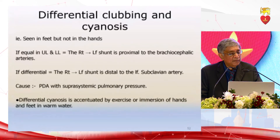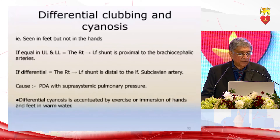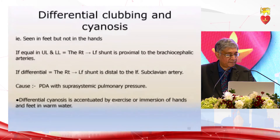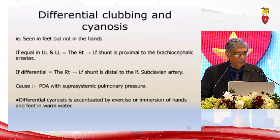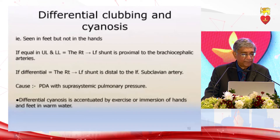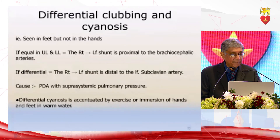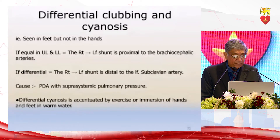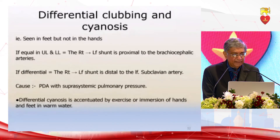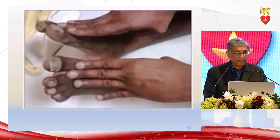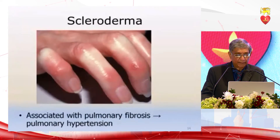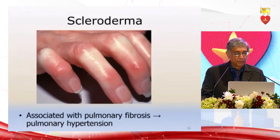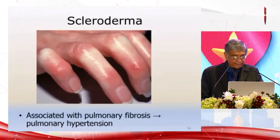Differential clubbing — everyone knows it is seen in the feet but not in the hands. If clubbing is equal in upper and lower limbs, the left-to-right shunt is proximal to the brachiocephalic artery. If differential — present only in feet — the shunt is distal to the left subclavian artery, and the only cause of clinical significance is patent ductus arteriosus with suprasystemic pulmonary pressures. If you are not sure, exercise the patient or immerse the hands in warm water to reveal the differential clubbing.